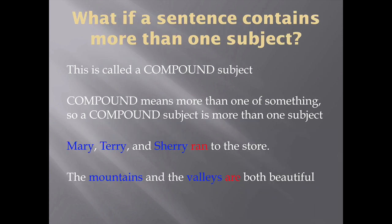All right, let's put that into grammatical terms. What if you have a sentence that contains more than one subject? Well, if you have more than one subject in a sentence, then you have a compound subject. So the word compound means more than one of something, so a compound subject means more than one subject. For example: Mary, Terry, and Sherry ran to the store. You can tell by our color coding that the subject consists of three nouns — Mary, Terry, and Sherry. That's called a compound subject.